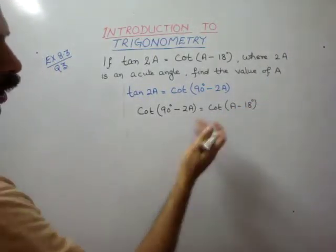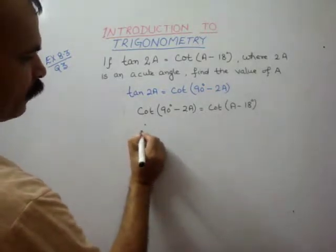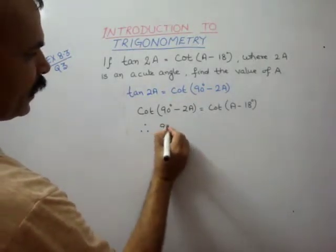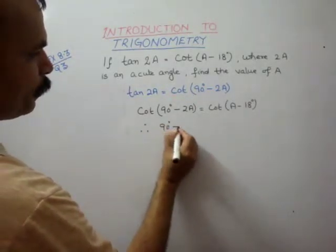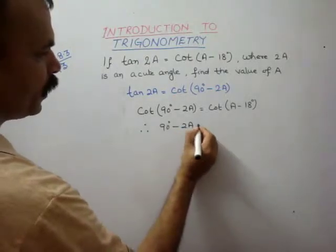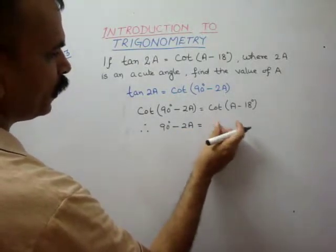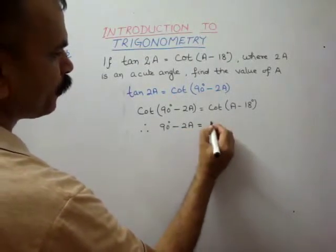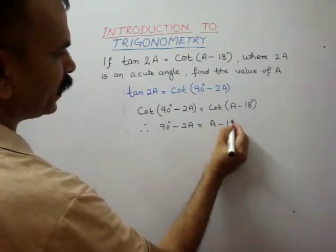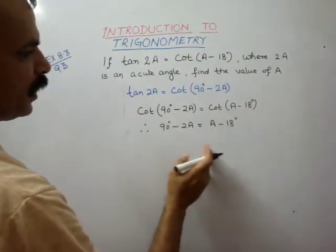Therefore, 90 degrees minus 2a is equal to a minus 18 degrees.